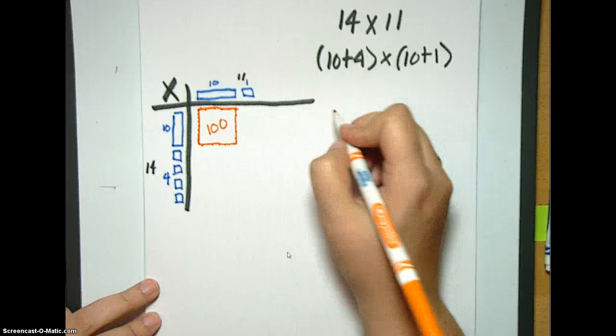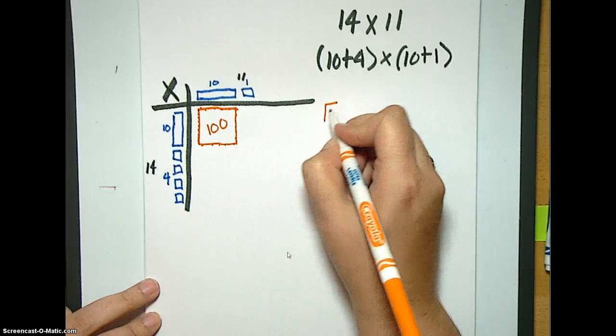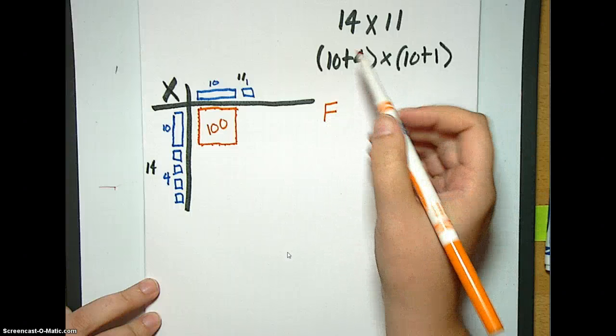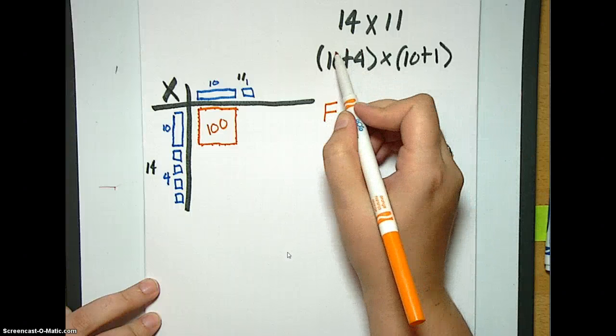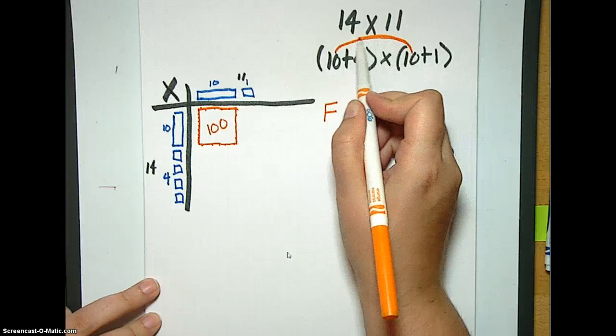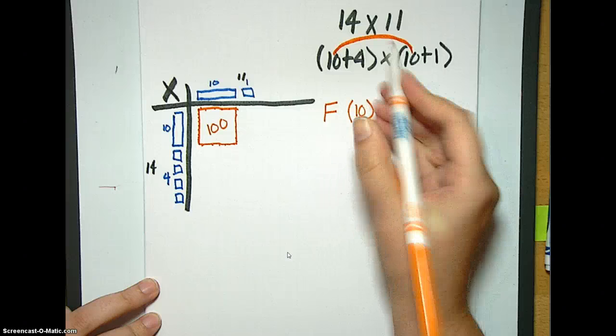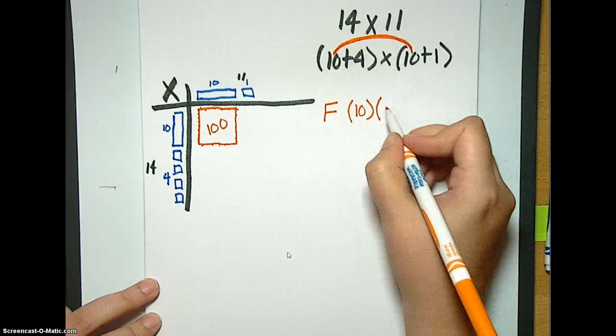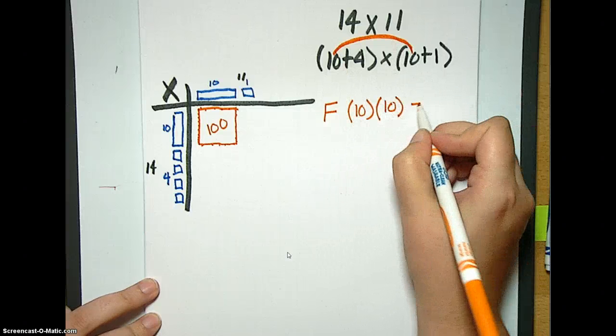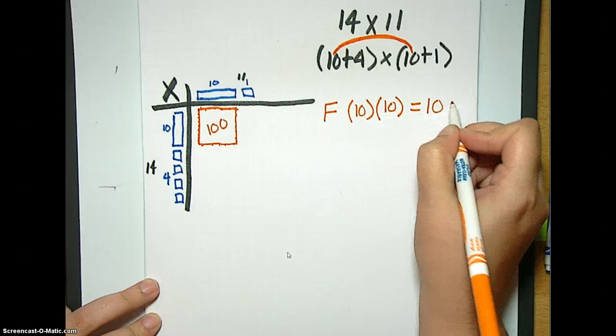And that's also the first part in FOIL. First, it's the first number in each parentheses. And we can draw our little rainbow sort of thing looking here. 10 times 10 equals 100.